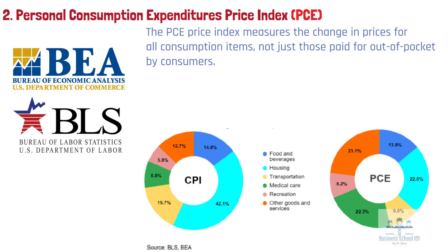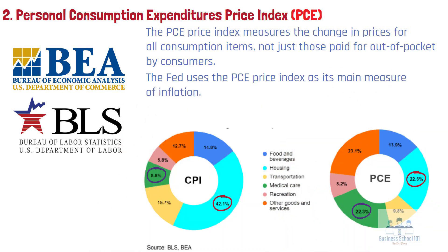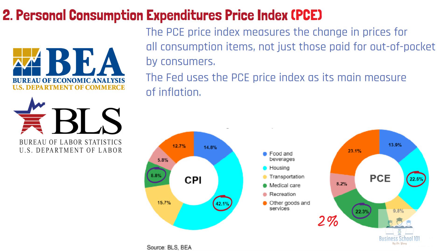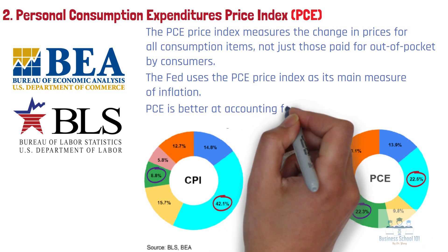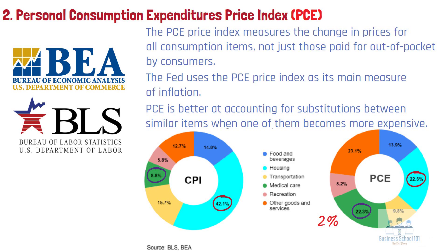This difference in scope means that the PCE Deflator and the CPI have very different weights. For example, the weight on healthcare is 22% in the PCE Index, but just 9% in the CPI. The weight on housing is 42% in the CPI, but just 23% in the PCE Index. That means a given increase in healthcare prices will affect the PCE Index much more than it will affect the CPI. The Fed uses the PCE Price Index as its main measure of inflation, with a long-run target for the PCE Price Index to increase at an annual rate of 2% over time. The PCE is also a chained index, while the CPI is not, meaning the PCE is better at accounting for substitutions between similar items when one becomes more expensive. Because its formula uses updated data, the PCE is believed to be a more accurate reflection of price changes over time and across items.